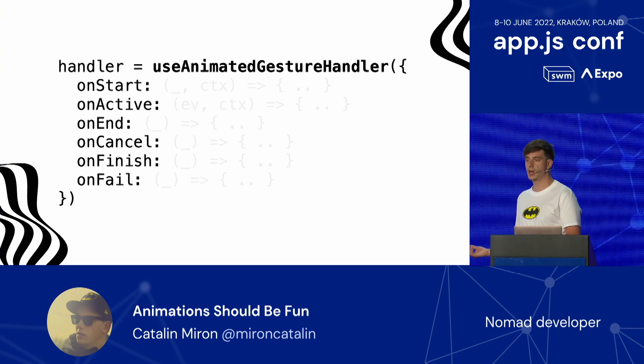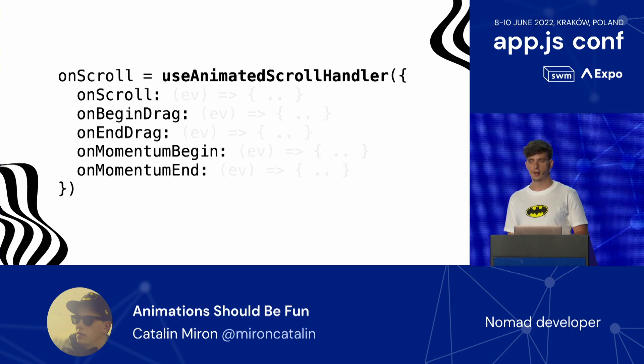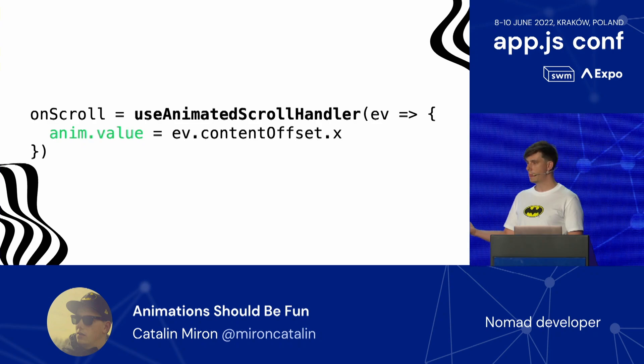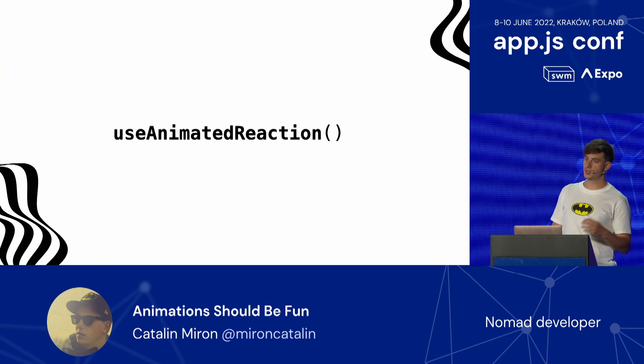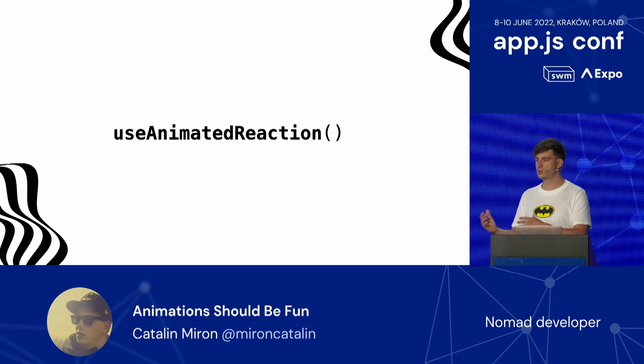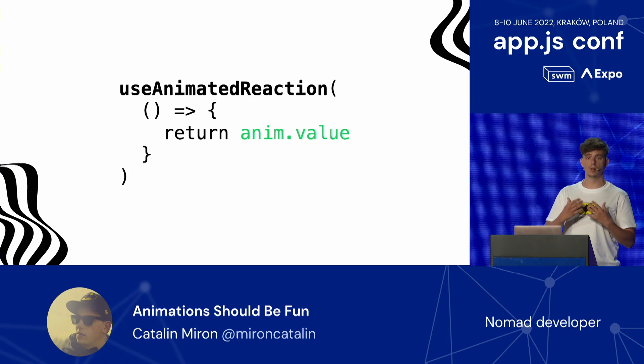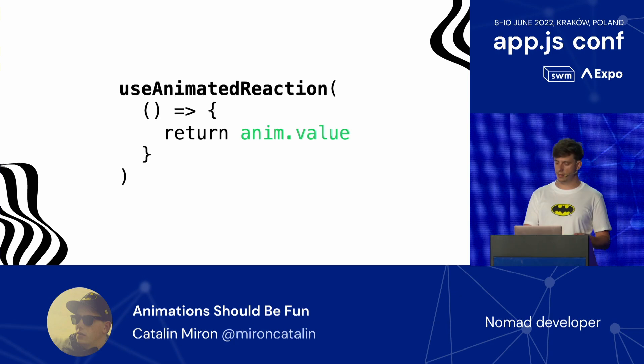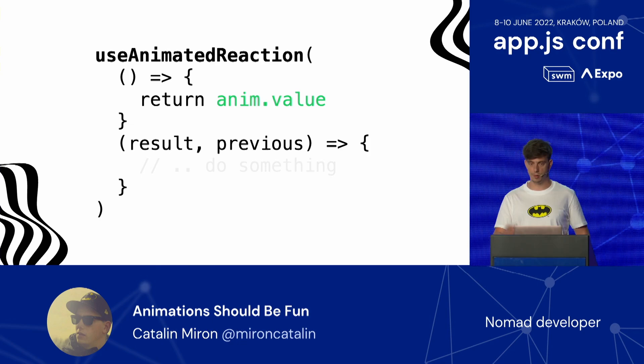You can listen to events as well. If you're using GestureHandler, you can use AnimatedGestureHandler with multiple listeners. For scroll, you can use AnimatedScrollHandler and receive that scroll event. If you're only interested in the onScroll event, you can use the shorthand notation and directly get the event and modify a shared value in it. Last but not least, there's useAnimatedReaction, which is useful if you'd like to set state or react to changes on different shared values. You specify which shared value you're interested in, react to it, and you get both the current value and the previous value.